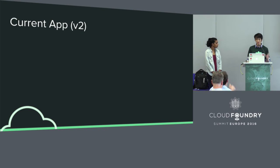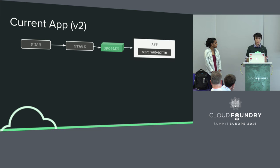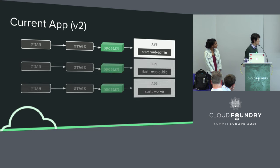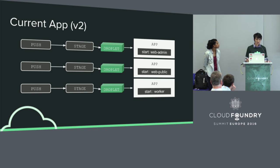The biggest problem with the current V2 architecture is that if you want to have a running application, you push all the source code and it becomes a package. You compile that package and get a binary droplet. From there, you can spawn a running application. But what if you want to spawn another process type — a different one — from the same application? You'd have to go through the whole stages again, ending up with multiple packages and multiple droplets just to run different process types from the same application. The packages and the droplet are really tightly coupled to their own application, which doesn't give us the flexibility we want for V3 features.